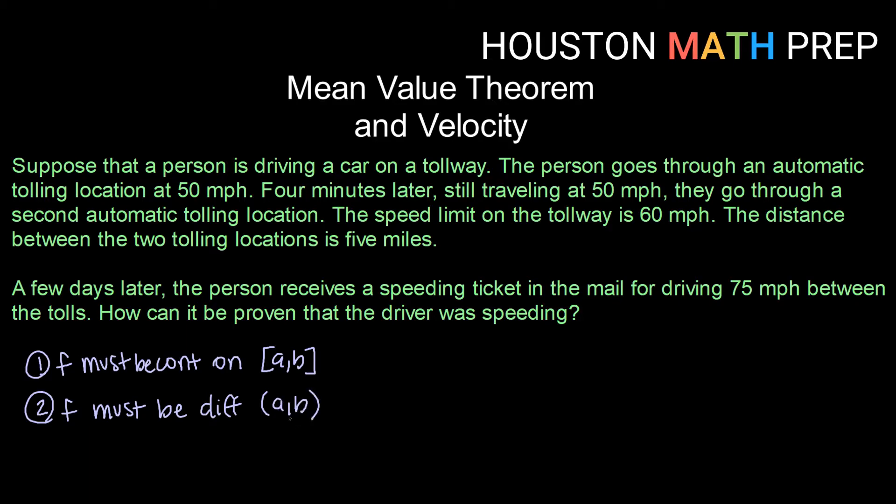Well, in this particular case, our function that we're thinking about is velocity. Velocity is continuous everywhere because when we think about driving our car, we can't suddenly transport from going, let's say, 50 miles per hour to instantaneously now going 70 miles per hour. The only way to do that is to speed up from 50 miles per hour up to 70 miles per hour. So we know that velocity is continuous on the interval.